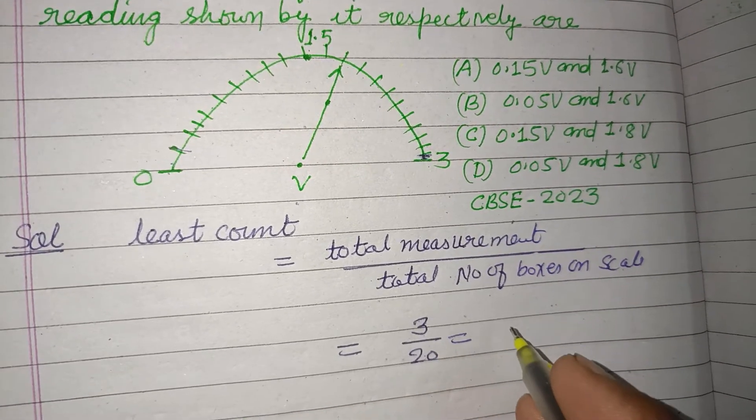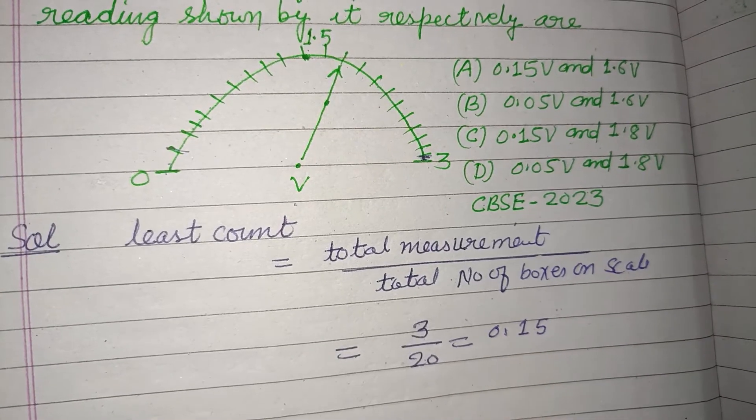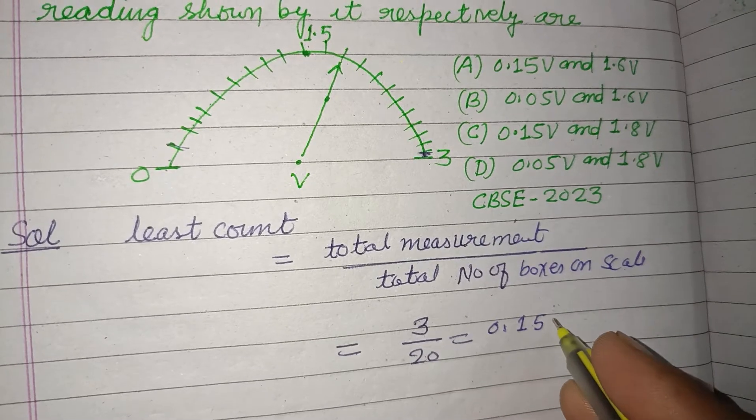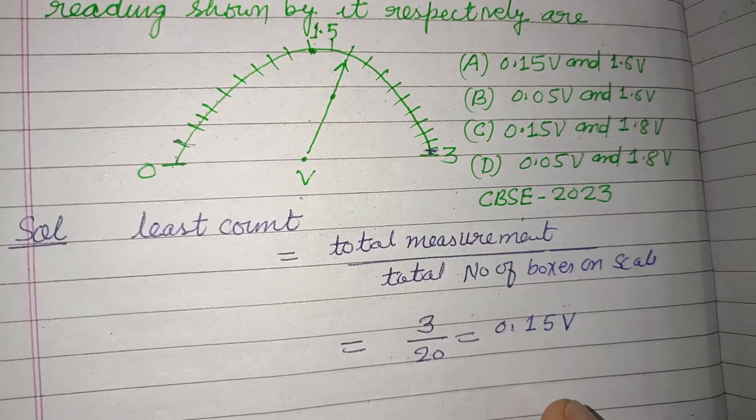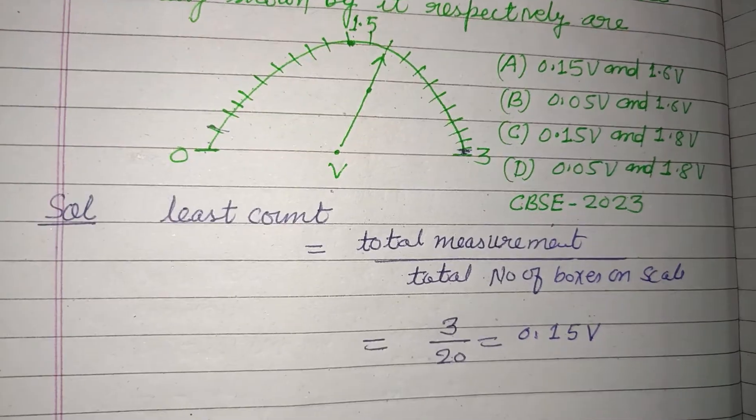So 3 by 20 is 0.15, point one five volt. So 0.15 volt is the least count of this voltmeter.